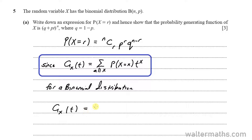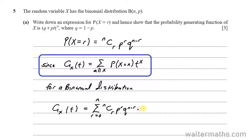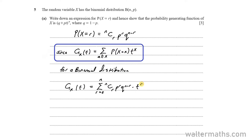So now for a binomial distribution, G_X of T is equal to the sum for values of R from 0 up to N. For the probability of a binomial distribution, we use N choose R times P to the R times Q to the N minus R, and that multiplies T to the power of R.